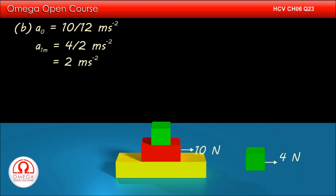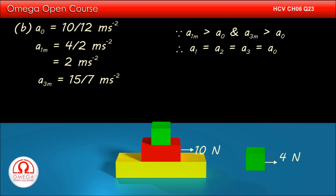Also, the maximum possible acceleration of the 7 kg block if moved only by friction is 15 by 7 meters per second square. Since the maximum possible acceleration of both the topmost and the bottommost block is more than the acceleration of the combined system, all the blocks move together and their common acceleration is 10 by 12, i.e. 5 by 6 meters per second square. This is the answer to part B of the question.